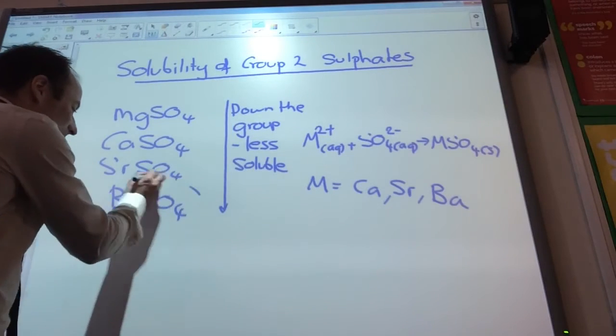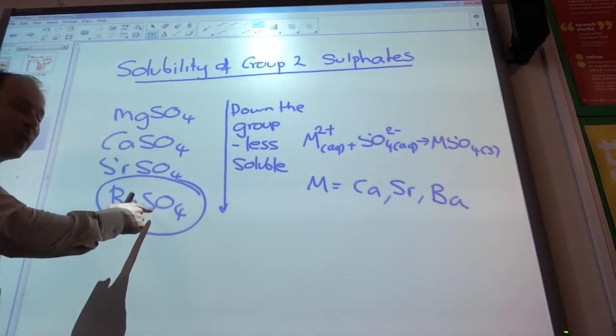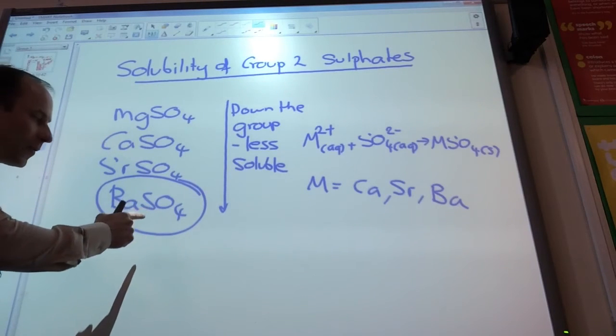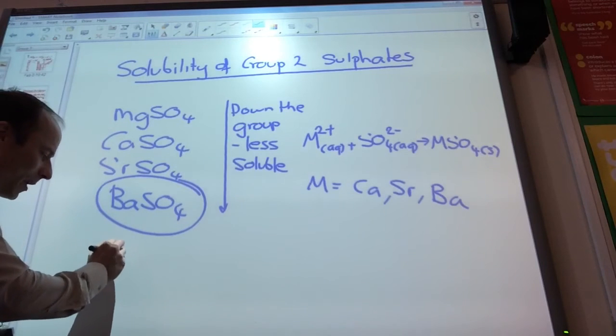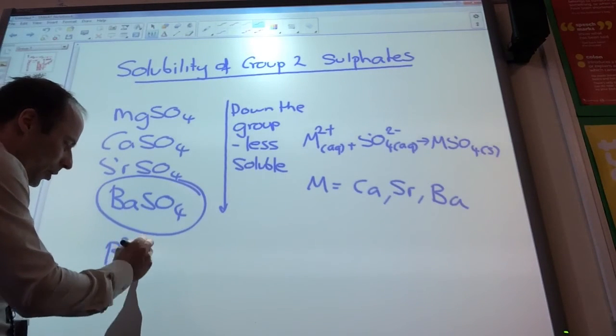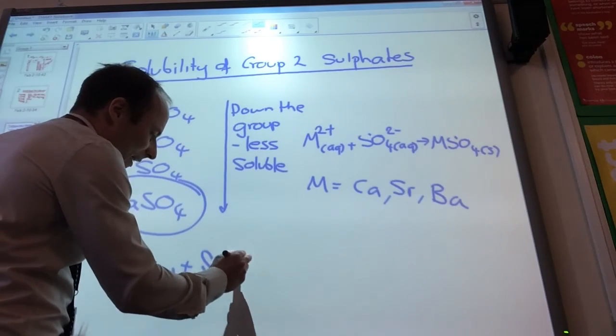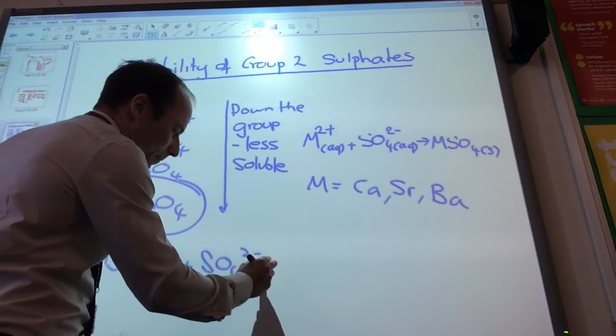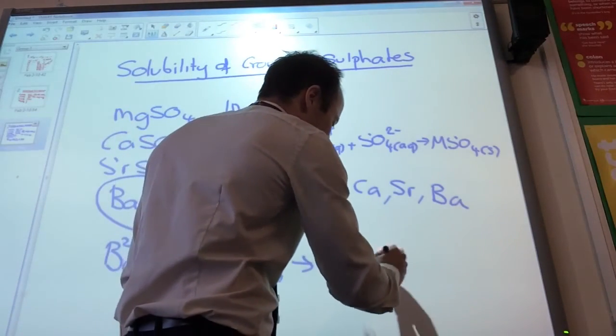Another good thing about the fact that this being insoluble is that this is actually used to test for the sulfate ion. So if I've got sulfate ions in solution, if I add barium 2+ ions to a solution and it's got sulfate ions in it like so, I will see a precipitate of barium sulfate.